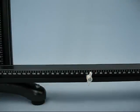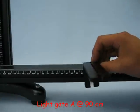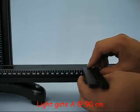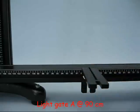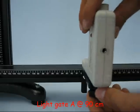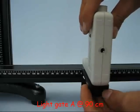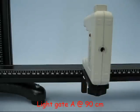Attach a small bracket at the 90cm mark with one of the bolt and wing nuts. Attach a light gate to the bracket with a wing bolt. The light gate should be perpendicular to the track.